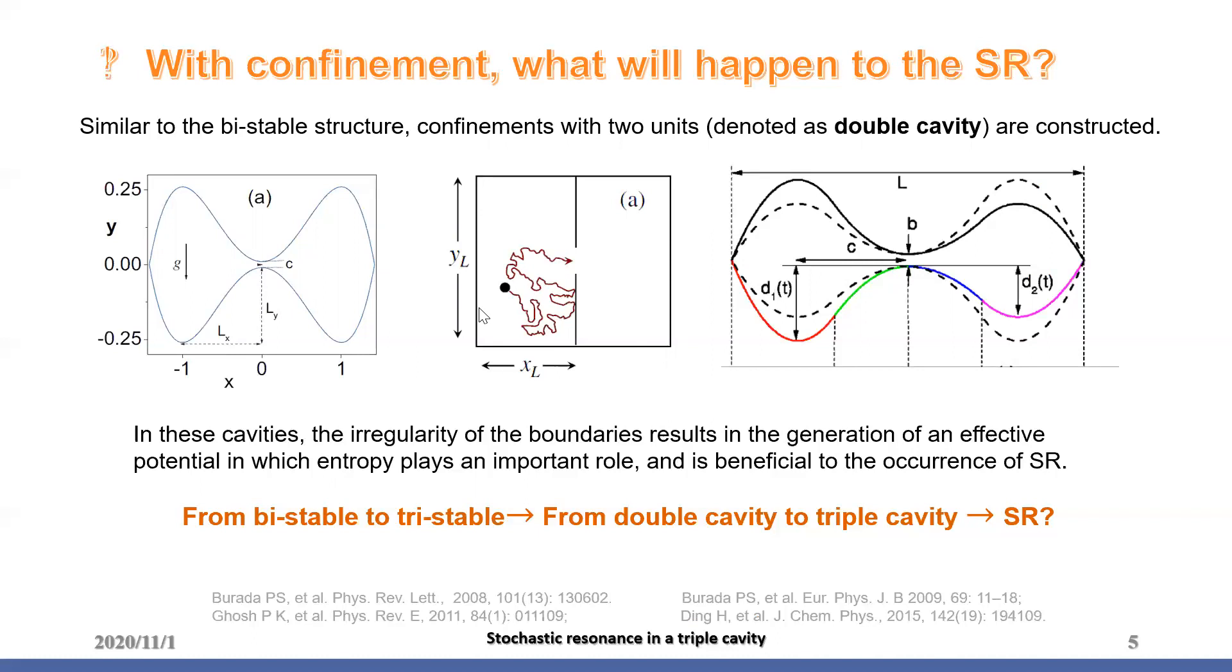Hereafter, SR in several double cavities with two units are developed like cavities with sharpness and oscillatory cavities. Among the studies, only rarely extended the results to cavities with more or less units. Inspired by the promotion of bi-stable to tri-stable potential, a question that does SR also exist in a triple cavity occurs. To answer it, we do the following works.